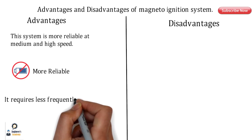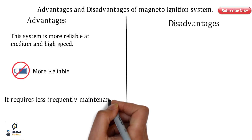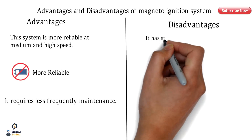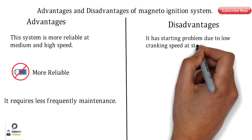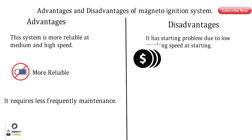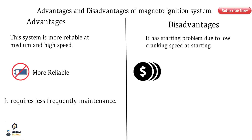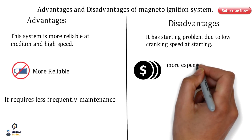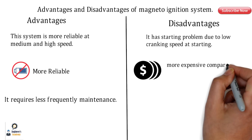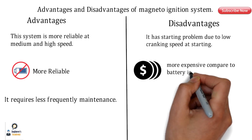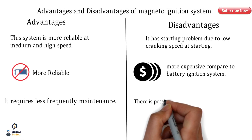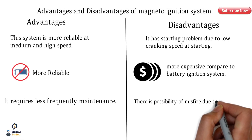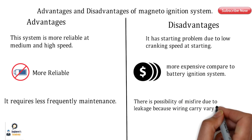It also has some disadvantages. There is a starting problem at low cranking speed, and an external battery is needed for starting, which adds cost. The magneto ignition system is more expensive compared to the battery ignition system, hence it is used in heavy-duty automotives. There is also a possibility of misfire due to leakage because the wiring carries very high voltage.